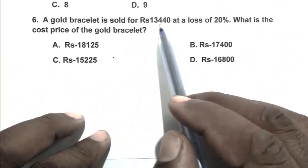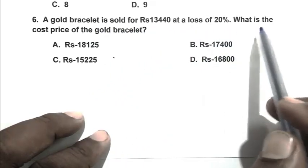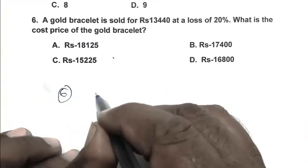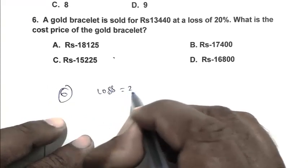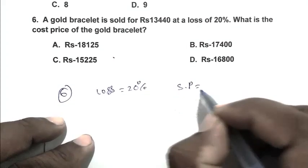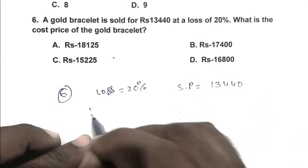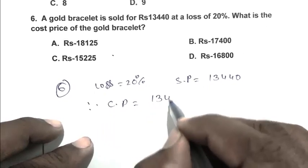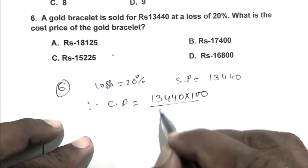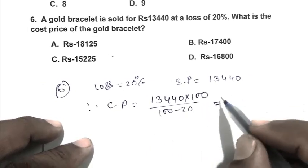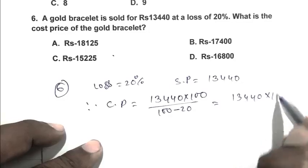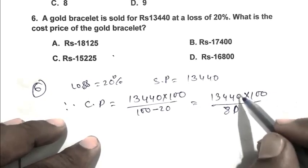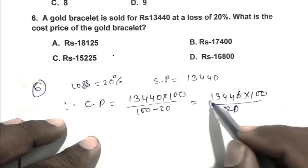Question number six: a gold bracelet is sold for rupees 13,440 at a loss of 20%. What is the cost price of the gold bracelet? Loss is 20%, selling price is 13,440. Cost price equals selling price multiplied by 100 divided by (100 minus 20), so 13,440 multiplied by 100 divided by 80.